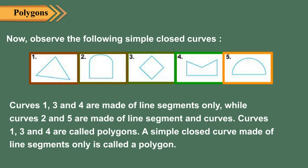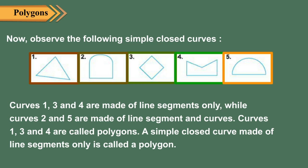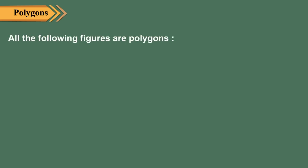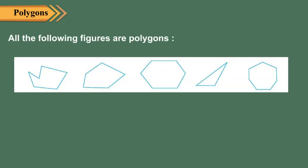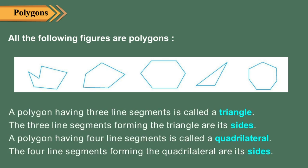Curves one, three, and four are called polygons. A simple closed curve made of line segments only is called a polygon. All the following figures are polygons. A polygon having three line segments is called a triangle. The three line segments forming the triangle are its sides.